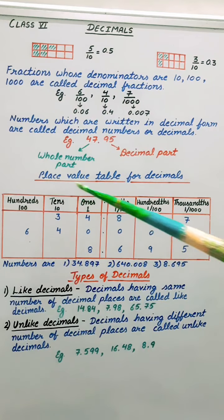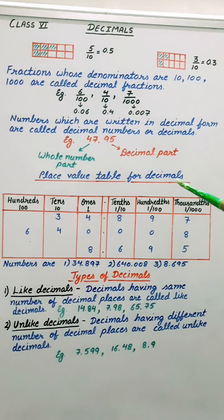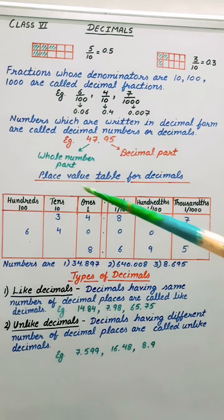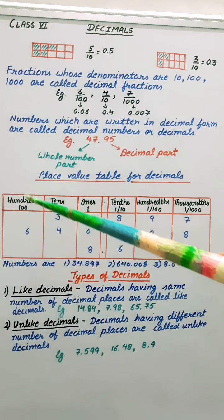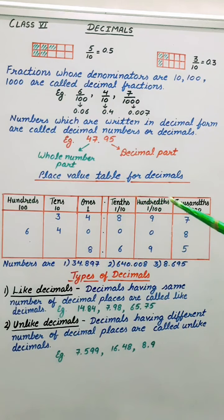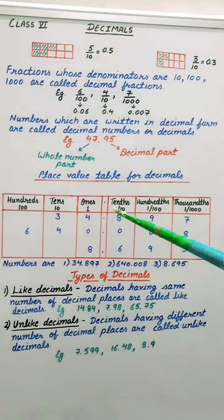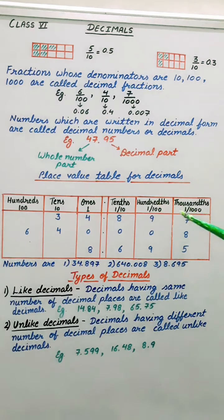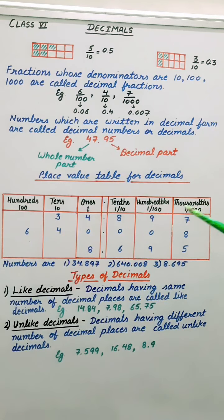Now let's see place value table for decimals. Now before decimals it is same. Ones, tens, hundreds, thousands. After the decimal it is tens, hundreds, thousands. That means 1 by 10, 1 by 100, 1 by 1000.